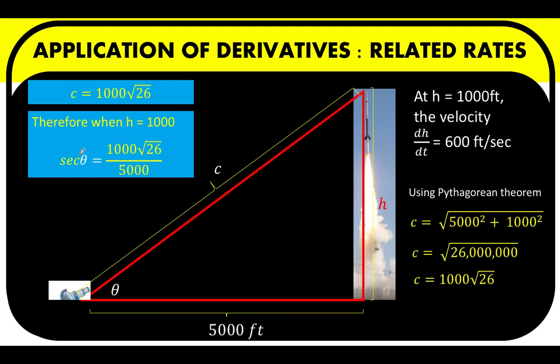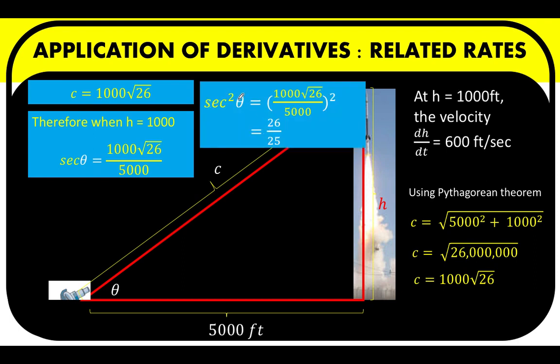We want the value of secant squared theta. So we square both sides to arrive at secant squared theta equals 26 over 25. This is now the value that we need to substitute in our preliminary results.